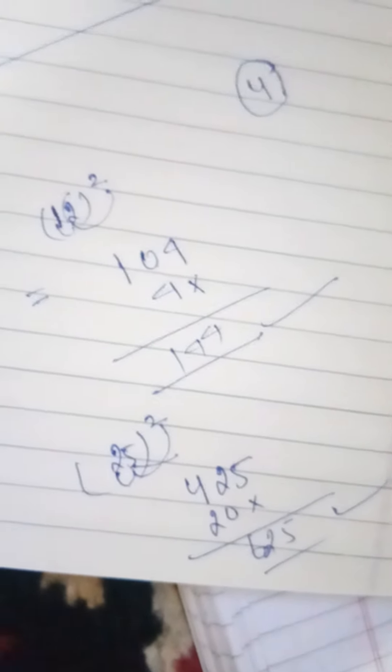Then 2 into 5 is 10. 10 into 2, and square of 20. 5, 6, 5. Then simply 2 digits.